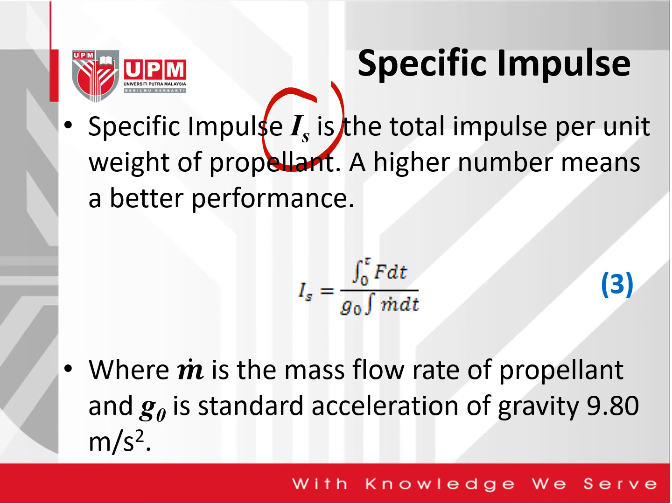Specific impulse is expressed in equation 3, where I_S equals the integration of thrust with respect to time divided by the gravitational acceleration times the integration of the mass flow rate of propellant with respect to time.